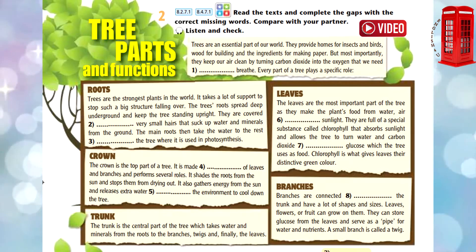The leaves are the most important part of the tree as they make the plant's food from water, air, and sunlight. They are full of a special substance called chlorophyll that absorbs sunlight and allows the tree to turn water and carbon dioxide into glucose, which the tree uses as food. Chlorophyll is what gives leaves their distinctive green color.